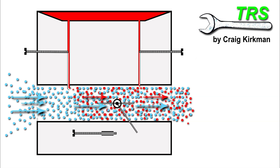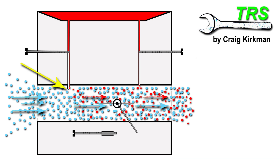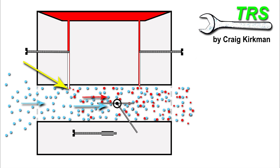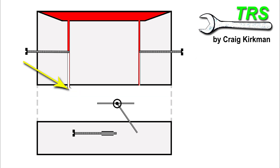From the engine running well again, adjusting the H screw inwards clockwise and reducing the amount of fuel coming from the main jet means the engine can combust the slight reduction of fuel much easier, so the engine revs raise. But as the screw is screwed in further and less fuel comes through, there isn't enough fuel for combustion and so engine revs reduce and eventually the engine will stop.